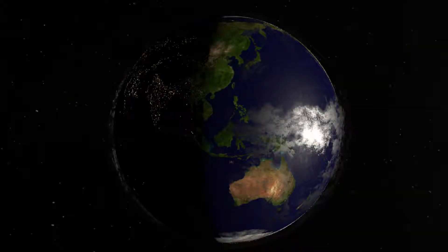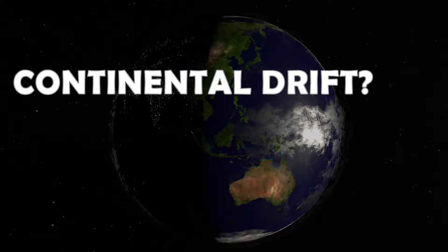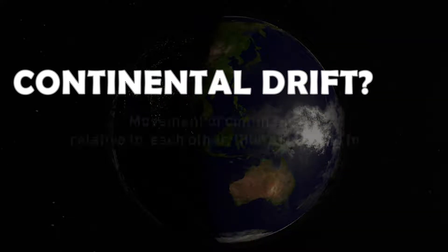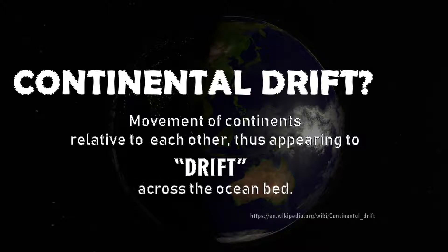Shortly, we will cut the Earth open and delve into the depths of what caused the continental drift. But what is continental drift? According to Wikipedia, continental drift is the movement of the Earth's continents relative to each other, thus appearing to drift across the ocean bed.